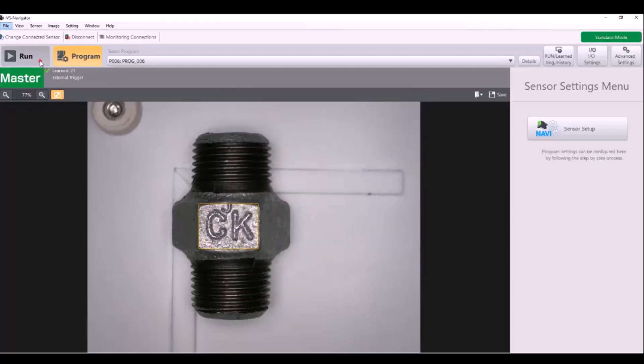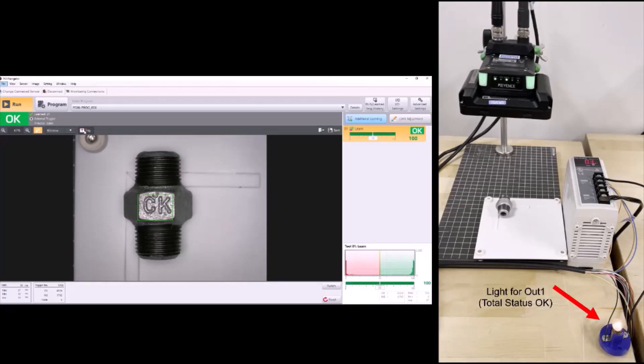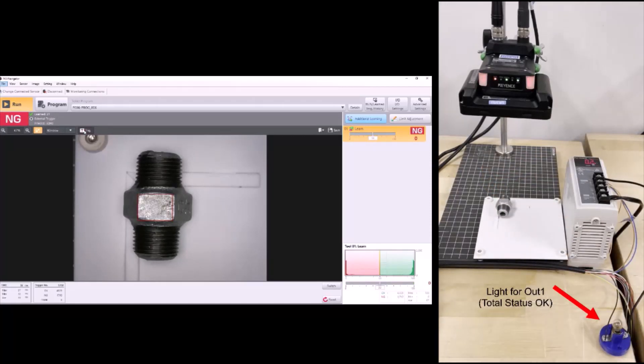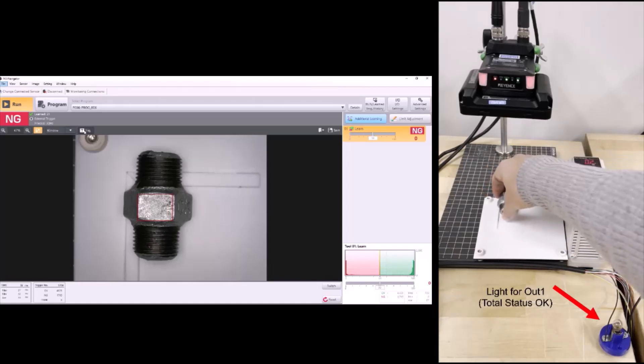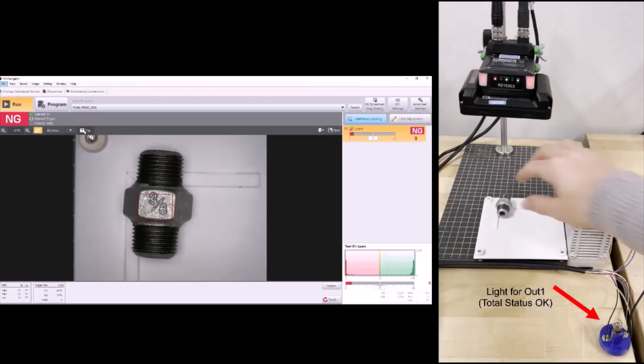When we put this into run mode, here is another side-by-side showing that for a good signal or a good part, my light is turning on. And when I get a no-good result, my light turns off. Again, indicating that my output is correctly working for an NPN setup.